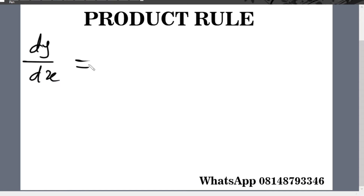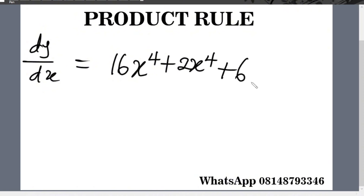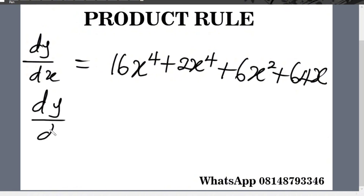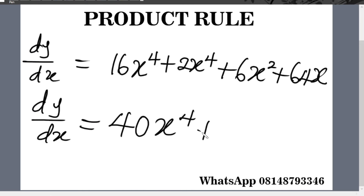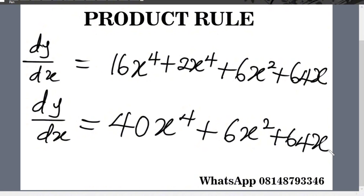Now let's collect the like terms. Collecting like terms gives us: dy over dx equals 40x to the power 4 plus 6x squared plus 64x. Now let's take another example.